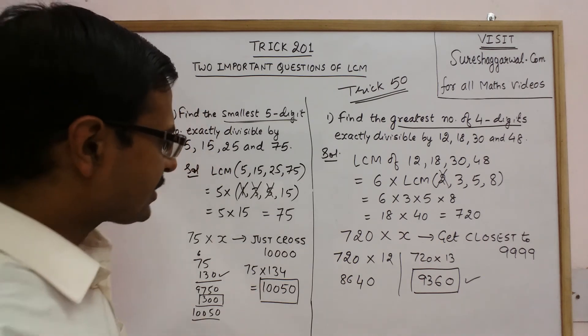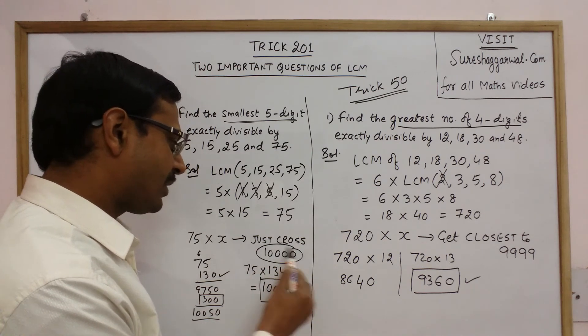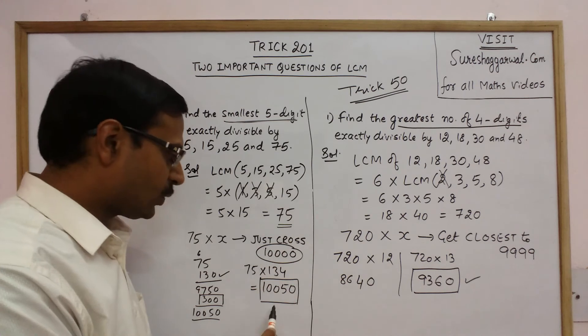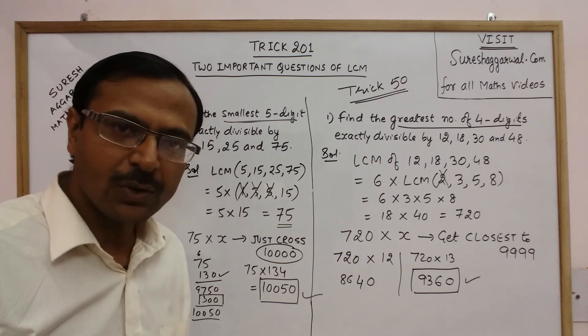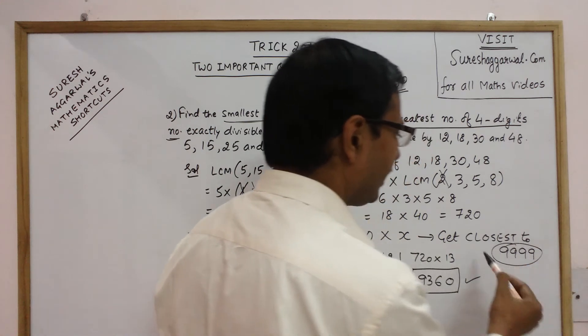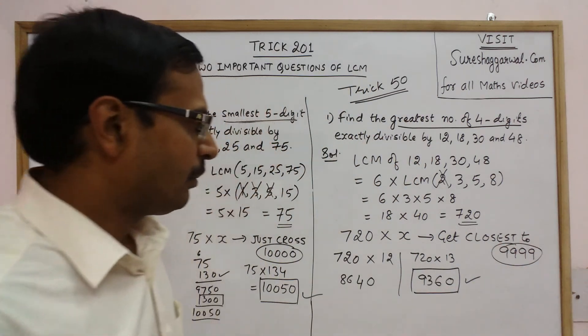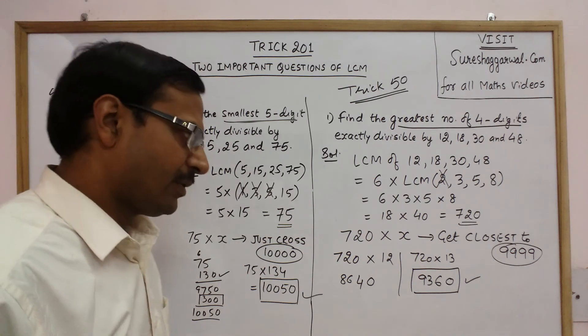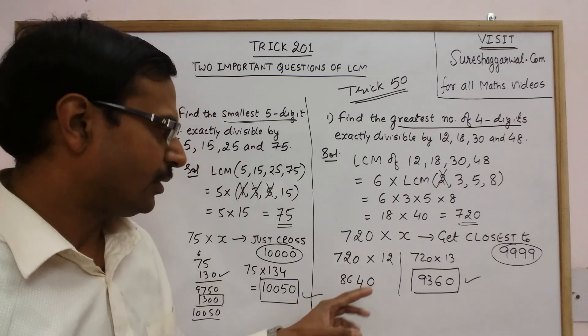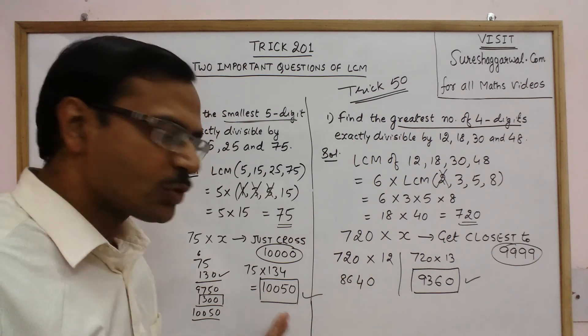Now there are obviously methods in which you can divide this number by the LCM and then get to this number. You can do that also. Here also if you divide 9999 by the LCM then also you can get to this number. But once you have little knowledge of shortcuts of multiplication you will find this method more suitable.